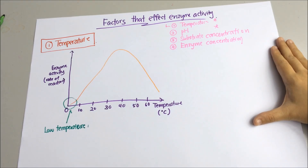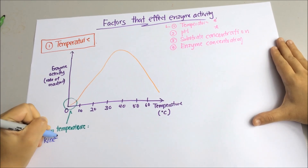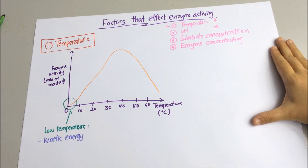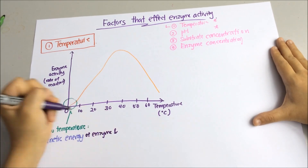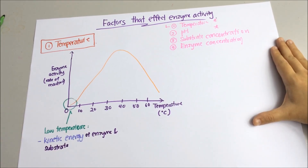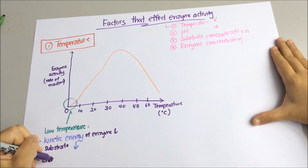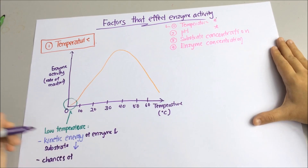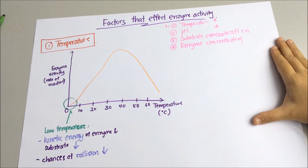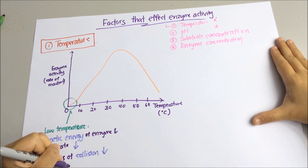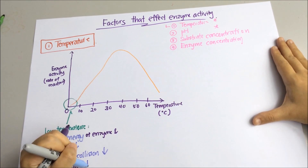At low temperature, the kinetic energy of the enzyme and substrate molecules is low. So the keyword is kinetic energy. It means that both enzyme and substrate molecules move slower, and the chances for them to collide and bind together to form the enzyme-substrate complex are low as well. Therefore, the rate of reaction is low. The keywords are kinetic energy and chances of collision.